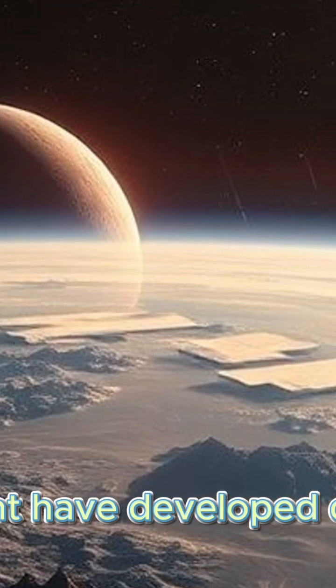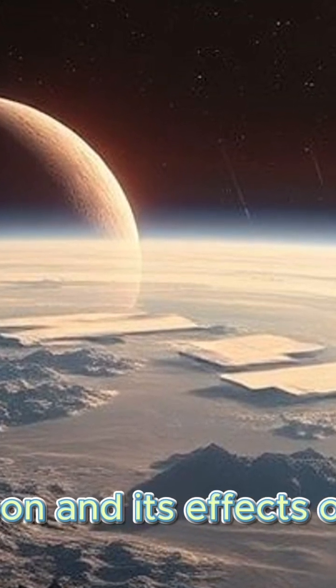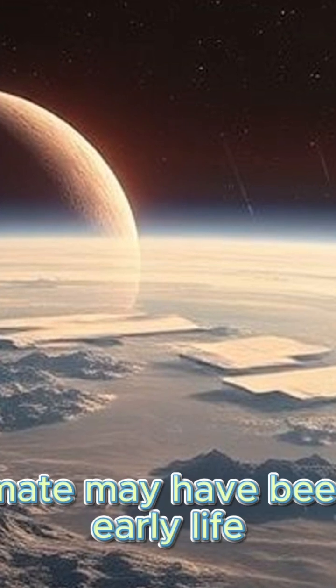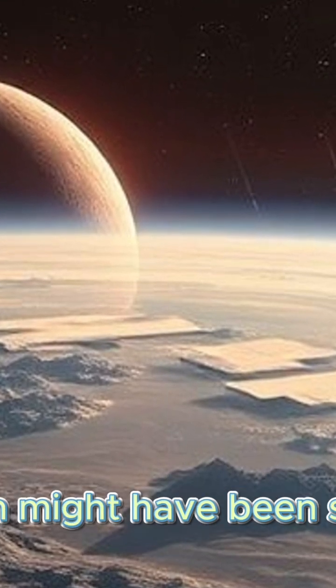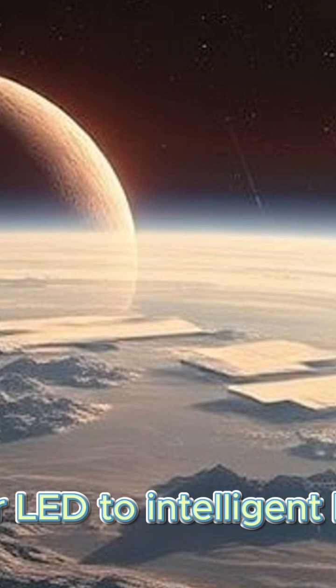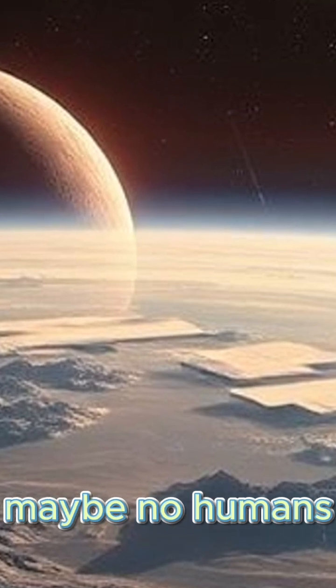Life might have developed differently. The moon and its effects on tides, light, and climate may have been crucial for early life. Evolution might have been slower, or never led to intelligent life at all. Maybe no humans, or intelligent life might have evolved much later.